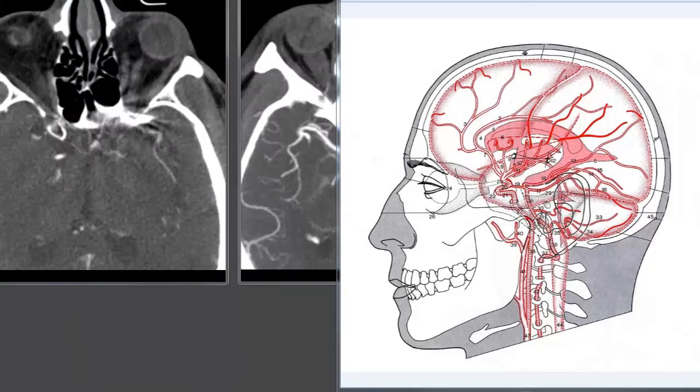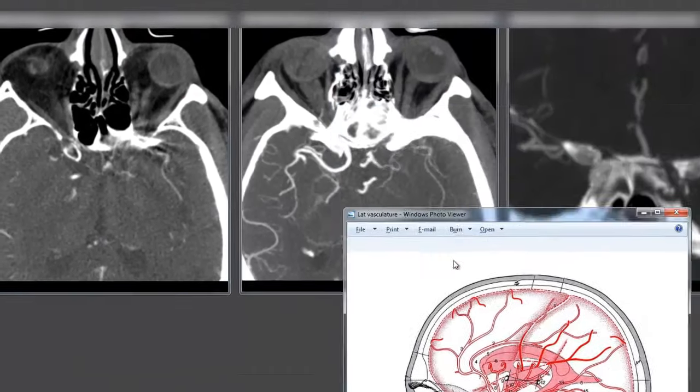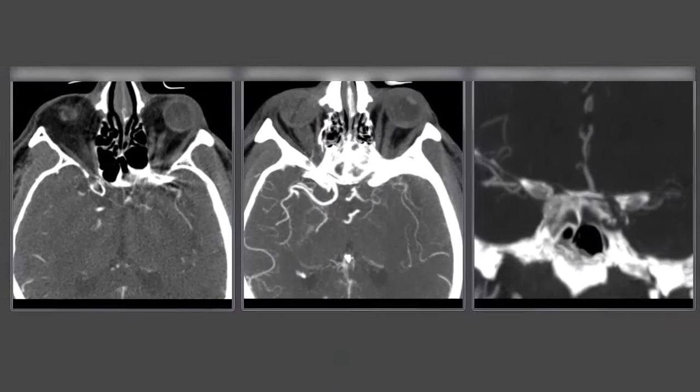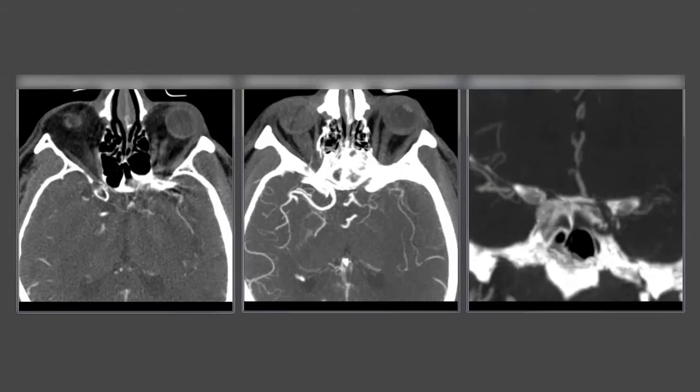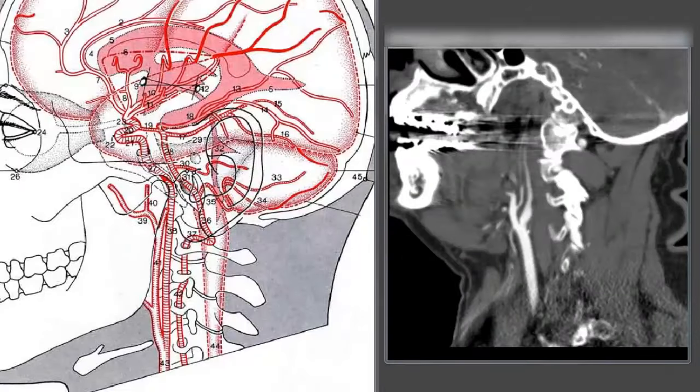We'll bring up our CT angiogram portion down in the neck reconstructions and get a view of what's going on in our patient's situation. Now we're looking down in the neck portion of the same patient's CT angiogram and this is a thick MIP reconstruction through the left internal carotid artery's origin in the neck.